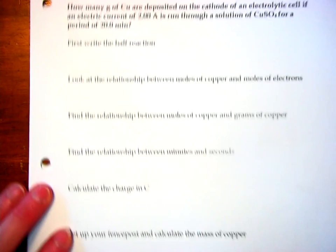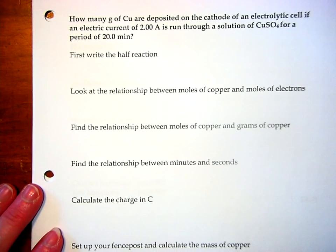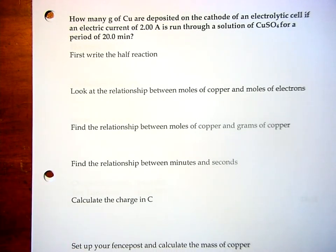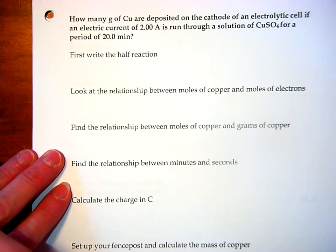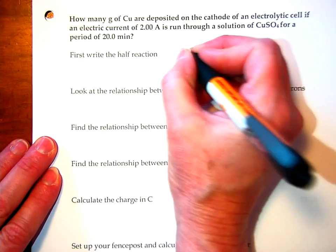So, let's look at a fairly typical problem. How many grams of copper are deposited on the cathode of an electrolytic cell if we have a current of 2 amps running through a solution of copper sulfate for about 20 minutes? Well, first we think about what's going on. Here we have copper 2 sulfate.